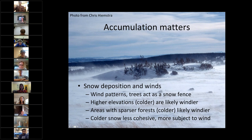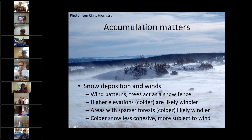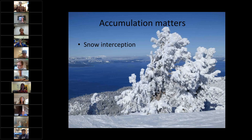To summarize: wind patterns matter for snow distribution, and trees can act as a snow fence. Why could temperature predict wind effects? Higher elevations, which are colder, are likely windier. Areas with sparser forests, which happens where it's colder, are likely windier. Colder snow is less cohesive and more subject to wind redistribution. So temperature was a very good index of how much wind effects might matter — correlation doesn't directly imply causation, but it can be a really good clue.